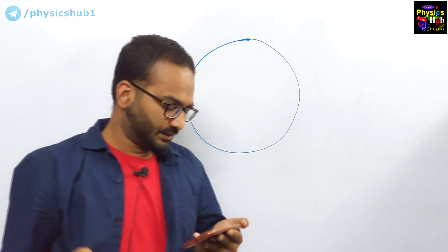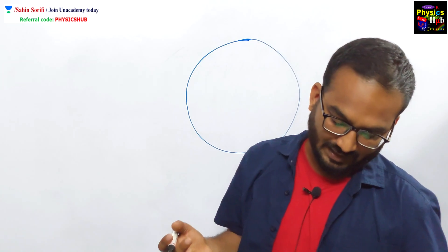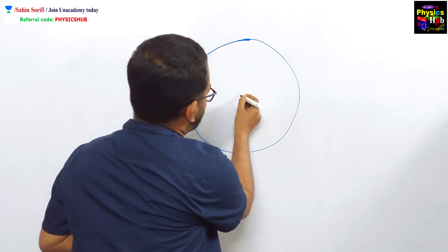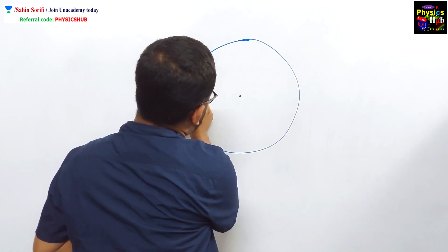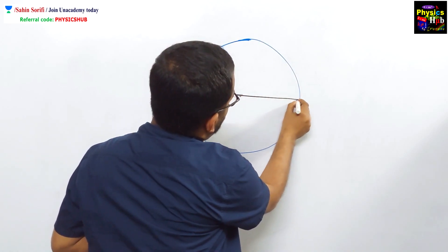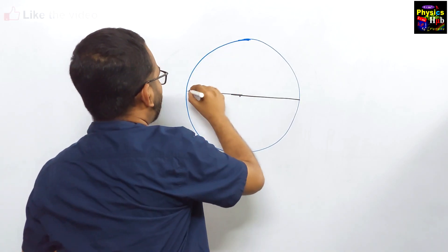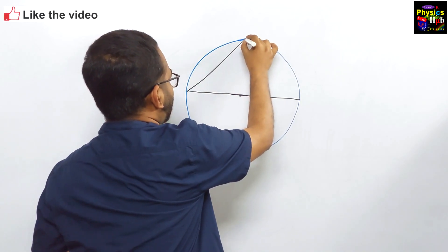So you have to calculate the maximum area of a right angled triangle inscribed in a circle of radius r. If you consider this is the center and if you take any diameter, then whatever point you take, that makes 90 degrees.